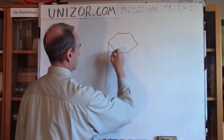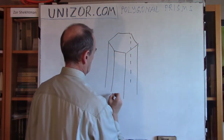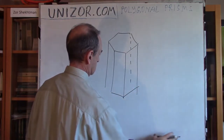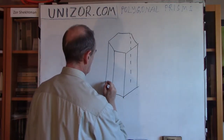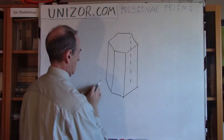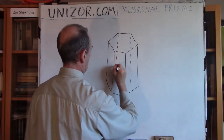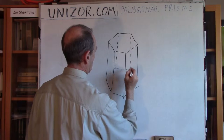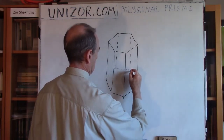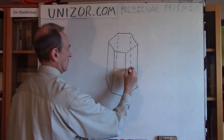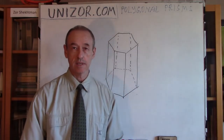So that would be the picture of the hexagonal prism — something like this. It looks like a hexagonal prism — hexagonal because there is a hexagon as a base.